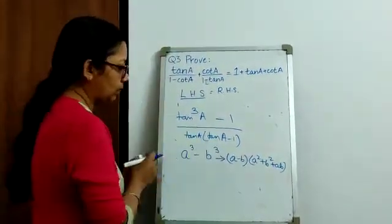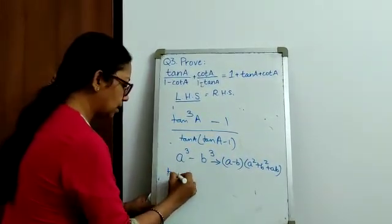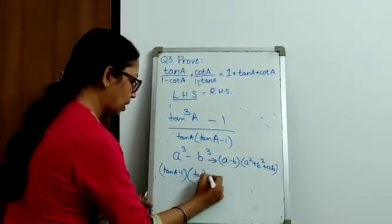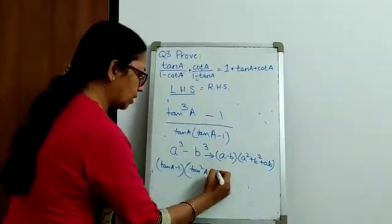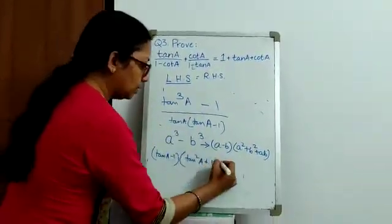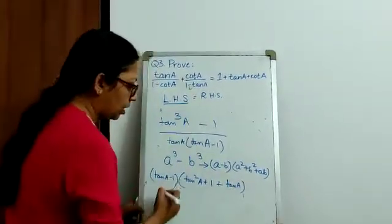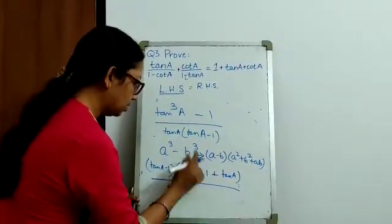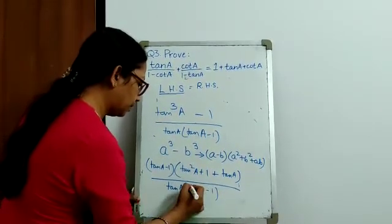So, what we can write about our numerator is, we can write it as tan A minus 1 into tan square A which is nothing but A square. B square will be 1 square, so it becomes 1, and A into B is tan A into 1 which can be written as tan A. And the denominator is, we just bring it as it is tan A into tan A minus 1.